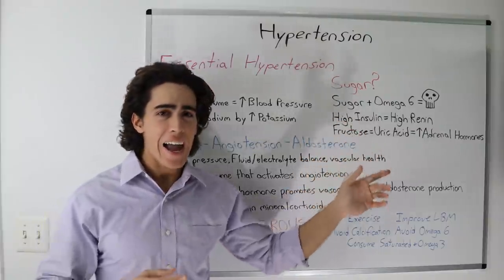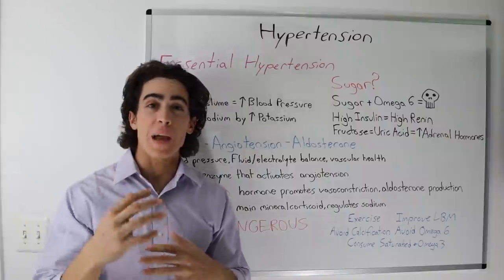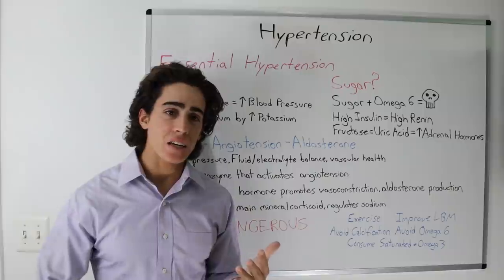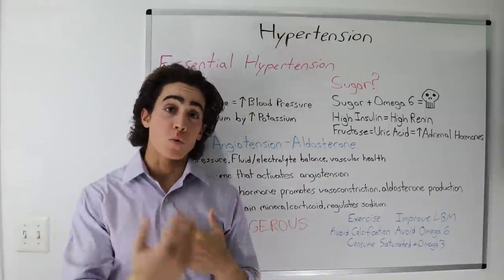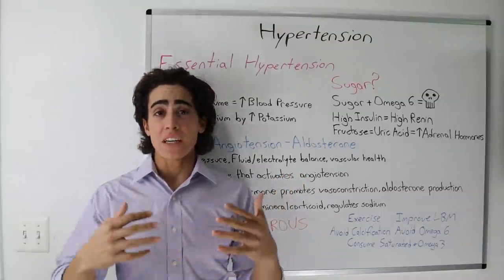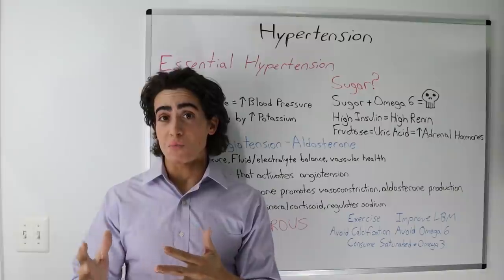When omega-6 is high, particularly linoleic acid, sugar can damage many organ systems in the body, including the adrenals, the pancreas, kidneys, arterial lining, resulting in degenerative diseases. There's a reason Italians have been eating tons of pasta for thousands of years without issues until now.